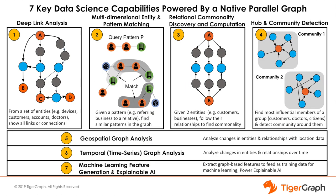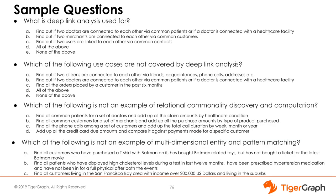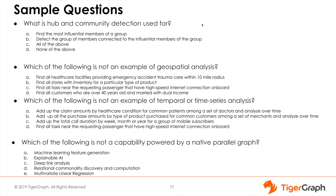To review, here are our seven key data science capabilities powered by a native parallel graph: deep link analysis, multi-dimensional entity and pattern matching, relational commonality discovery and computation, hub and community detection, geospatial graph analysis, temporal or time series graph analysis, and machine learning feature generation and explainable AI. These are the questions you should keep in mind before taking the quiz online: What is deep link analysis used for? Which use cases are not covered by deep link analysis? Which of the following is not an example of relational commonality discovery? Which is not an example of multi-dimensional entity and pattern matching? What is hub and community detection used for? Which is not a good example of geospatial analysis? Which is not an example of temporal or time series analysis? And which is not a capability powered by a native parallel graph?